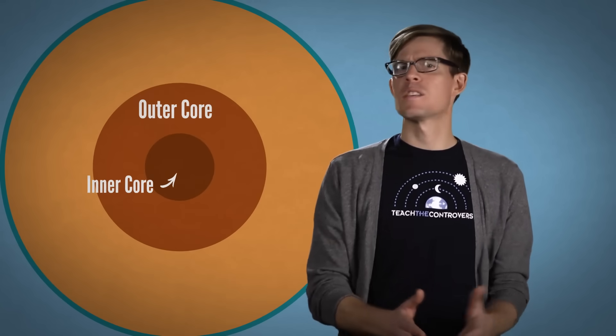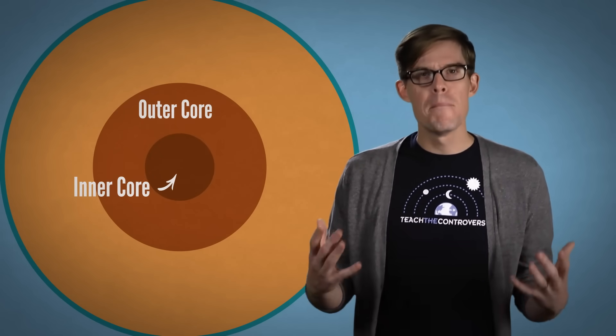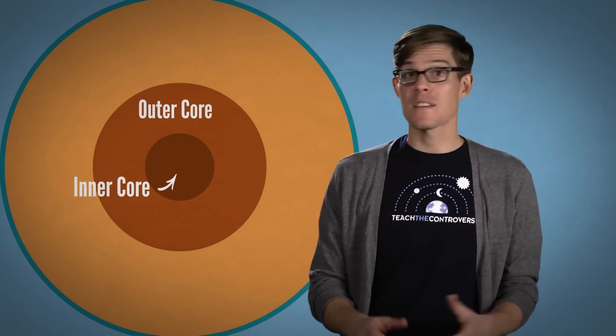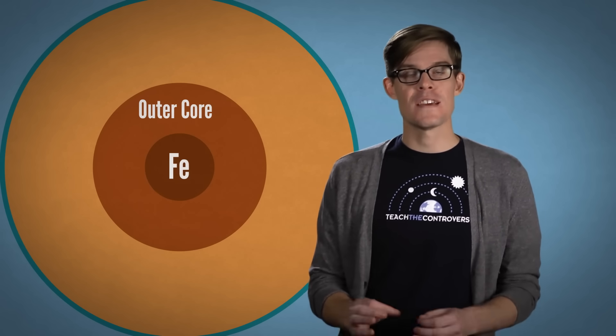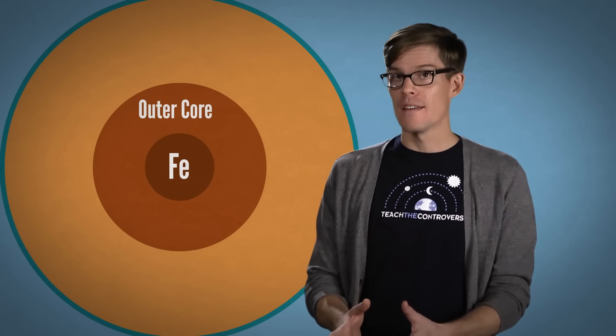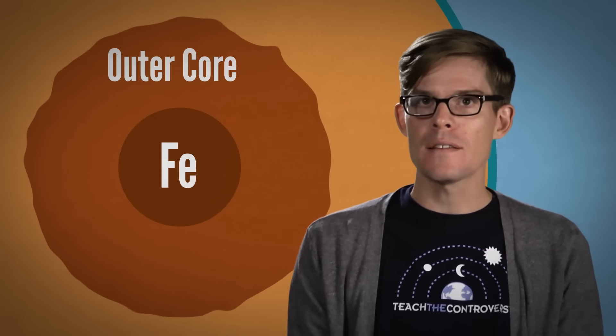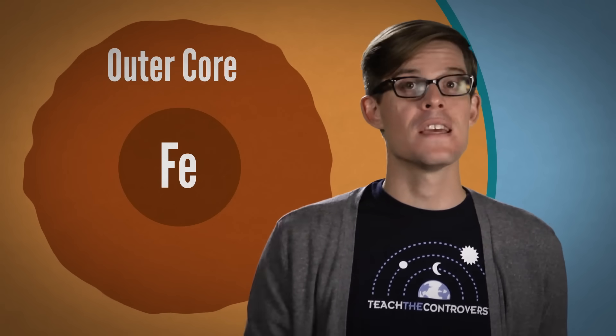The inner core experiences pressures more than 3 million times what we do on Earth's surface. Which means that despite being as hot as the surface of the Sun, the iron in our planet's inner sphere is likely solid and not liquid. The outer core is most likely liquid, because it's hot, but not under as much pressure as the inner core.